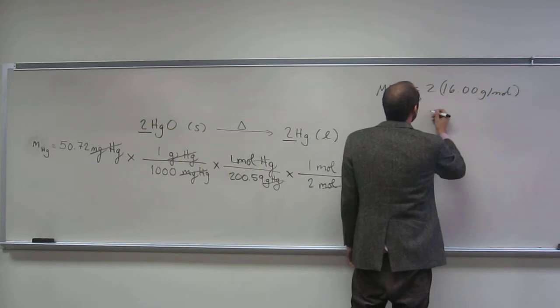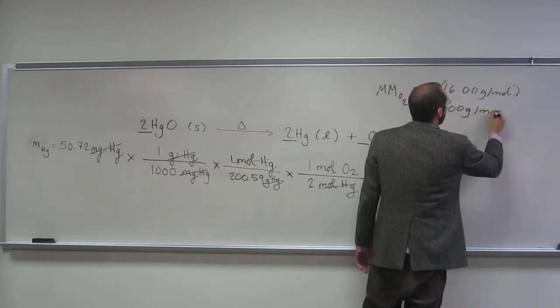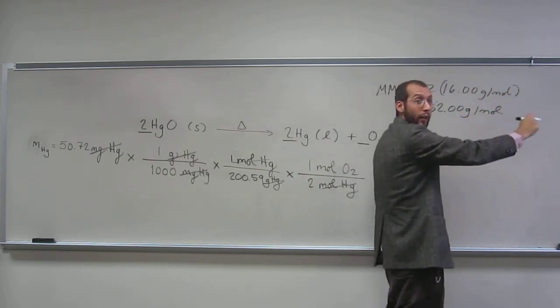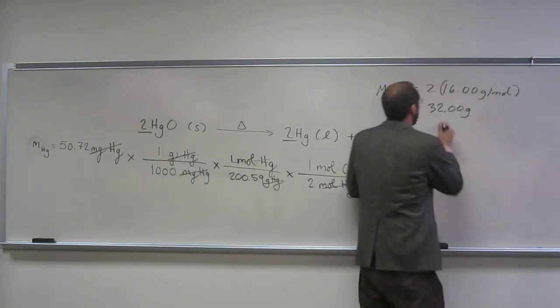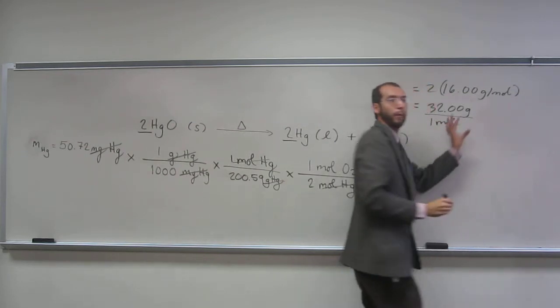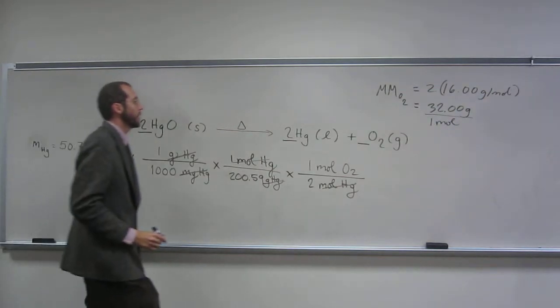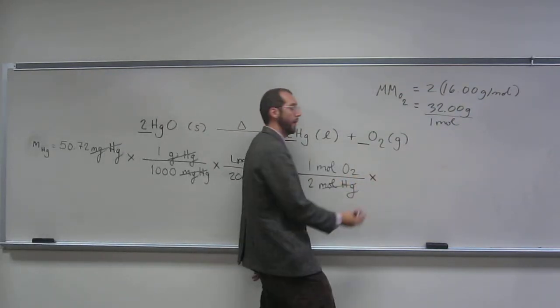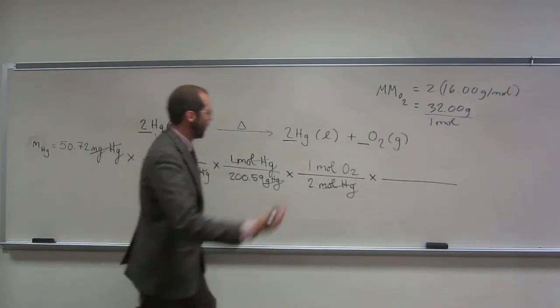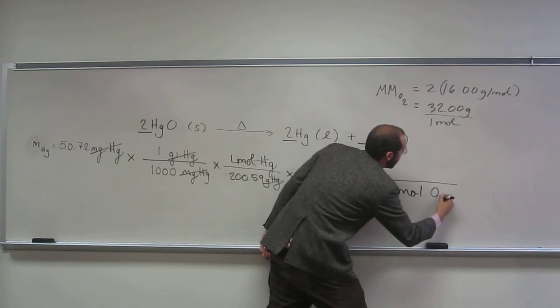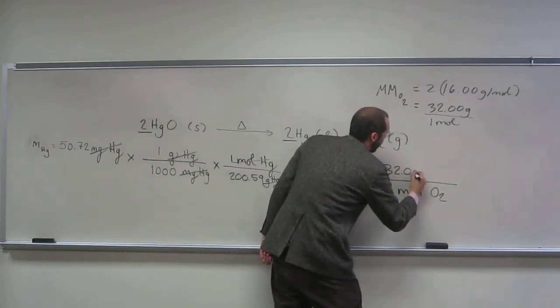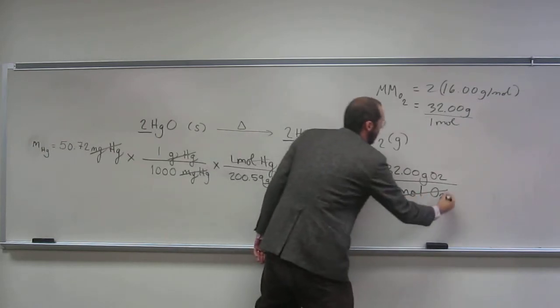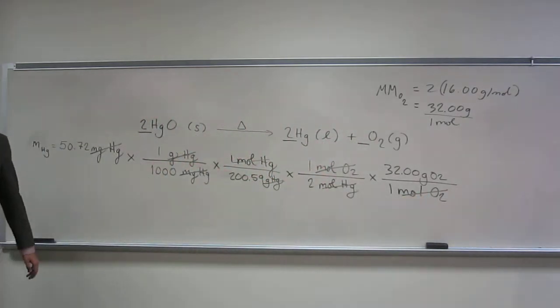So what am I going to do? Again, multiply by a ratio. What's going to be on the bottom there? One mole of O2, and up here 32.00 grams per mole. Cancel, cancel. So that should give me the mass of oxygen that was also produced in this reaction. Is everybody okay with that? Let's just go through it and figure out what it is.